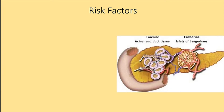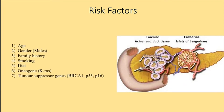The risk factors include age — it is more frequent in those over 70 to 75 — and it is more frequent in men. Family history increases risk two to three times if a parent or sibling has the disease. Other risk factors include smoking, alcohol, obesity, and a diet low in fiber, fruits, and vegetables. Oncogenes like K-RAS are the most common, along with mutations in tumor suppressor genes like p53, p16, and BRCA2.